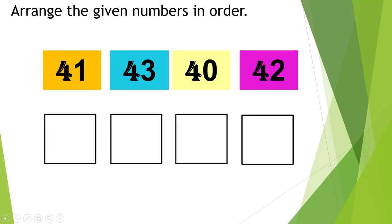Now here we have a game. In this game, we have to arrange the given numbers in order. Here are some numbers that we just learned, but these numbers are not arranged. Let's arrange the given numbers in order. These are 41, 43, 40, and 42. Students, think for a second and tell me which number will come first.